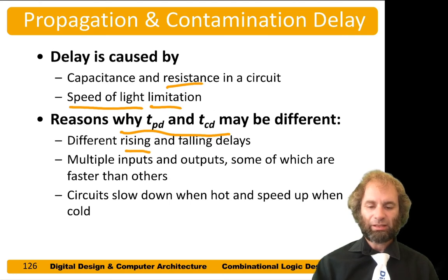The propagation and contamination delay might be different for a variety of reasons. Sometimes the delay of a gate rising versus falling could be different because rising is going through a network of PMOS and falling is going through a different network of NMOS transistors. The delays could be different because we have many inputs and outputs to the gate, and some inputs might be faster than others. Also, the delay might depend on the environment—circuits tend to be slower at high temperature and faster at low temperature. They tend to be faster at high voltage and slower at low voltage.